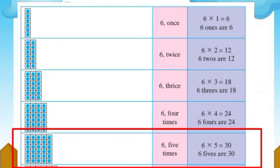In the next column there are 6 given five times. Sahaha 5 veda de lelia aahet — 6 multiplied by 5 is equal to 30. 6 fives are 30 — sahagunile 5 barobar 30.